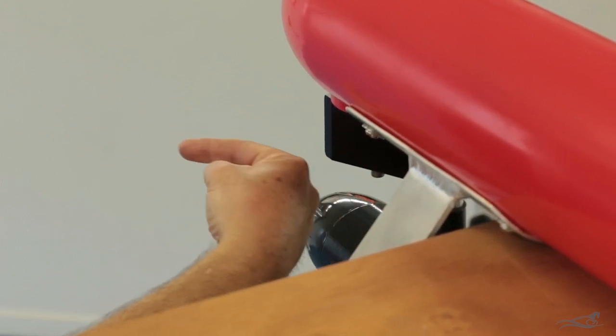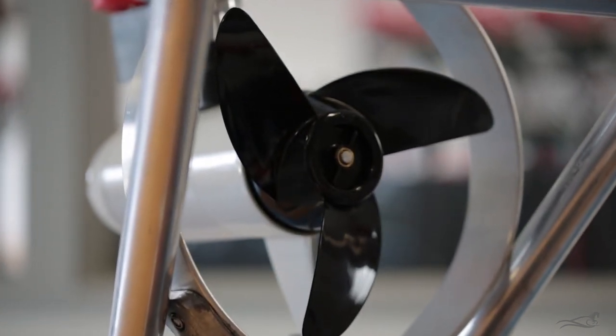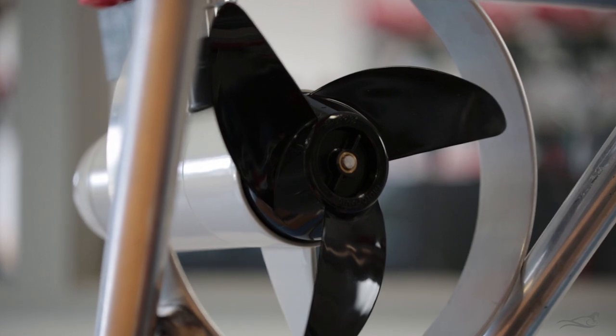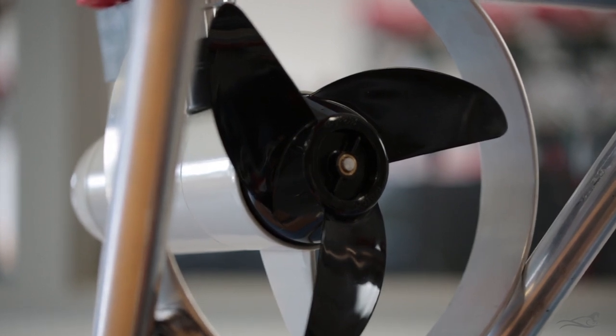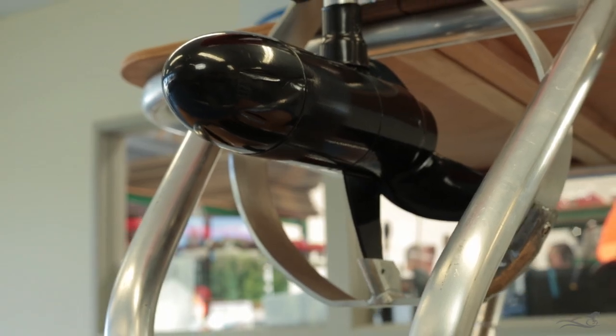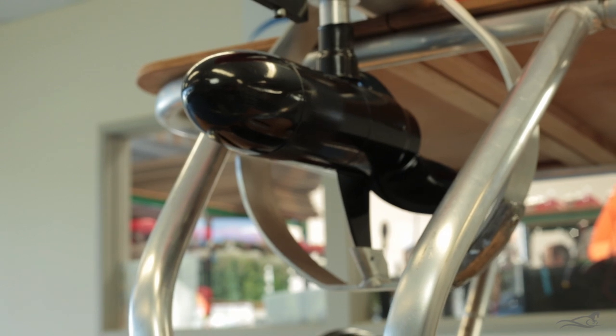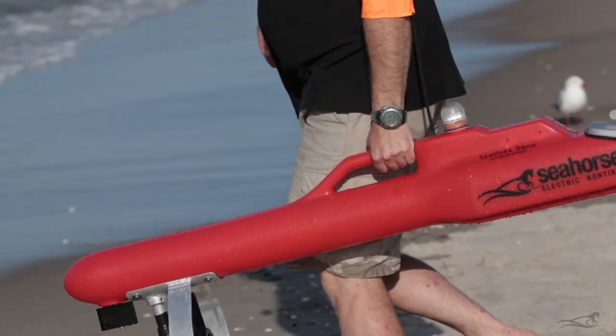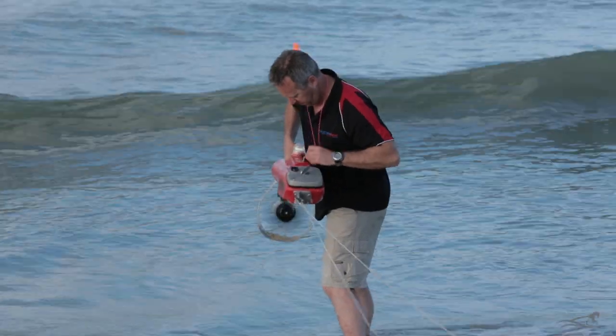The Seahorse uses the very reliable Mercury electric motors. The white motor with the 3 blade prop is the 46lb thrust motor, and the black motor with the 2 blade prop is the 30lb thrust motor. The solid aluminium motor frame protects the prop and motor.